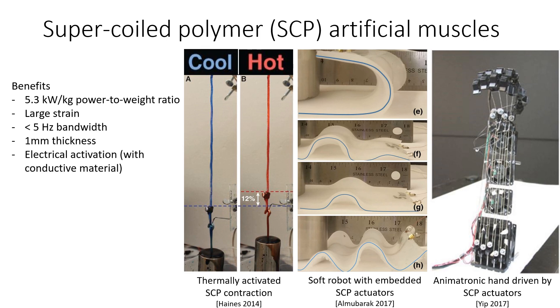By using conductive materials, they can be activated with electric power through joule heating. They've been introduced as the driving mechanism for several robotic systems, such as the soft robot and animatronic hand shown in the right figures.